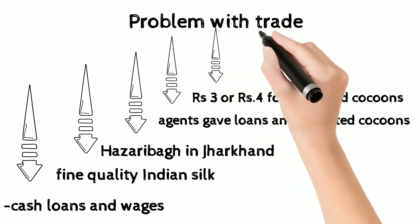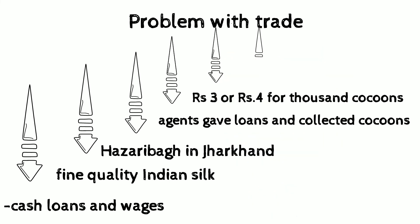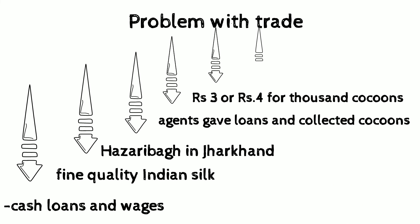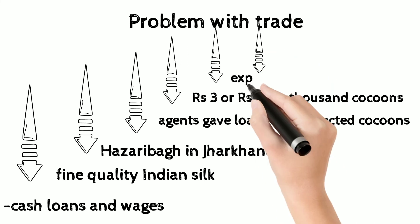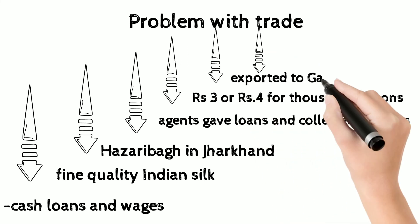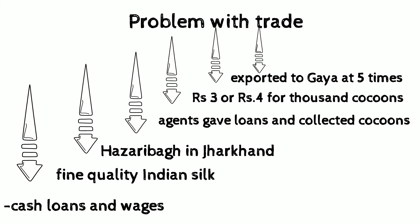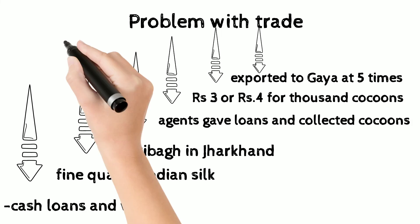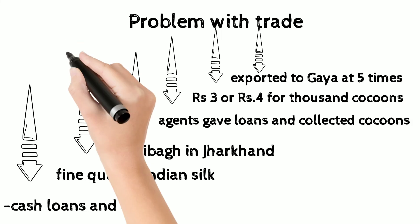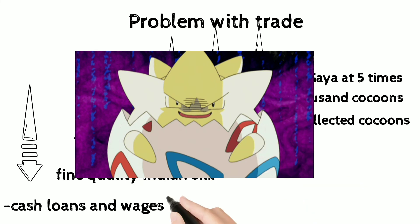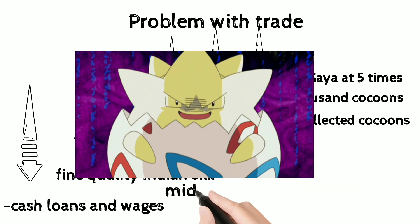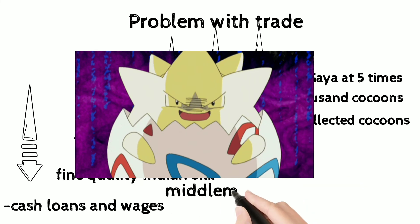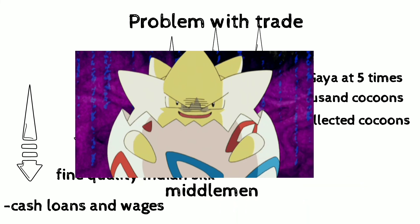The agents then exported these cocoons at five times the basic price to Gaya. The middlemen acted in an exploitative way and gained huge profits at the cost of these people.